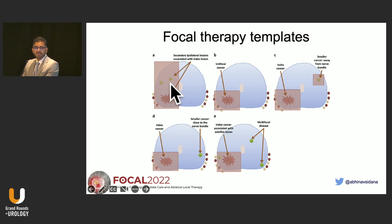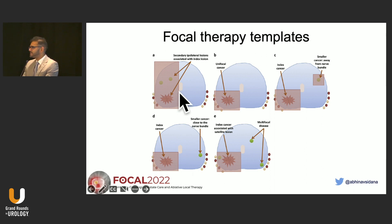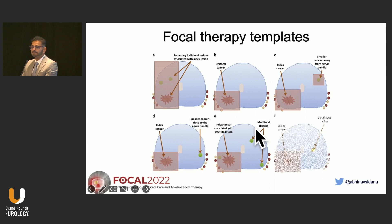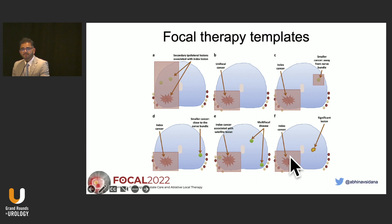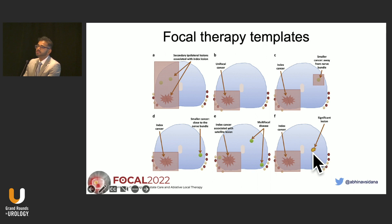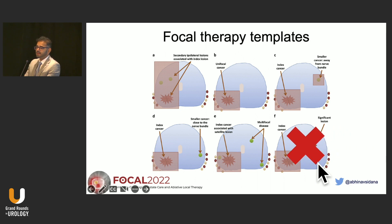If the insignificant disease is on the same side as the significant disease, patients can be offered more extensive ablation like hemiablation or quadrant ablation to address both at the same time. What we don't want is a scenario with a larger significant index lesion on one side and a smaller grade group 2 or higher disease on the contralateral side — those patients should not be offered focal therapy due to higher risk of disease progression.